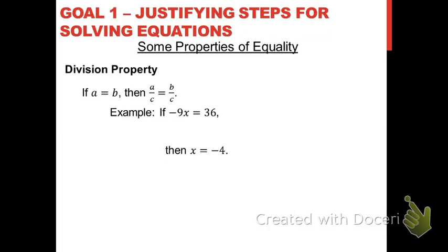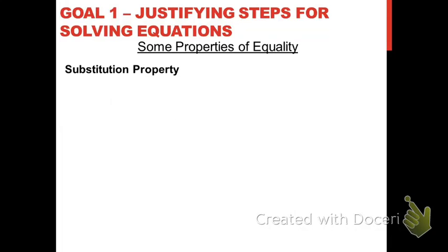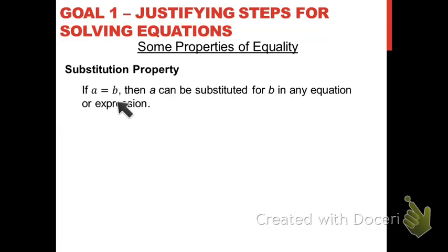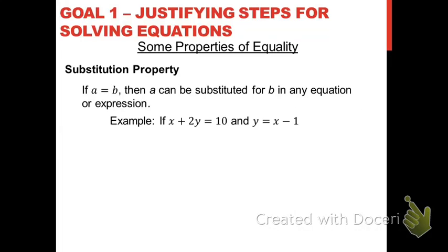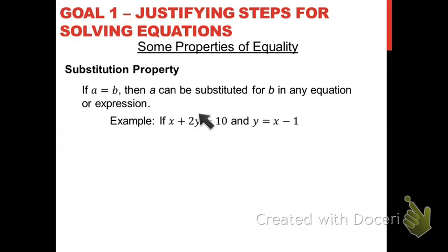The other property for this video is the substitution property of equality, and you've used it many times before. If you know that two values a and b are equal to one another, then a can be substituted for b in any equation or expression. For example, if you have x plus 2y equals 10, and you know that y equals x minus 1, you can substitute that value into the equation in place of y, giving you an equation with only one variable. The property that allows you to replace y with x minus 1 is the substitution property of equality.